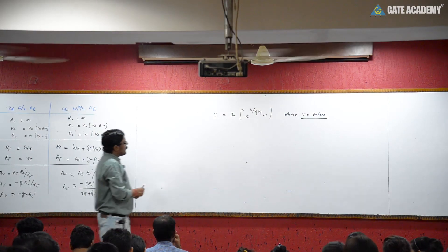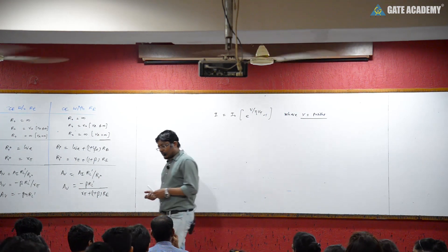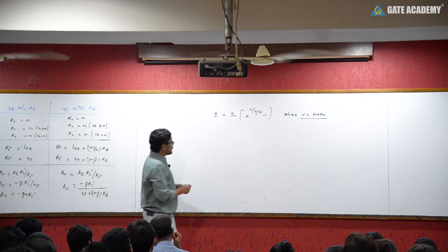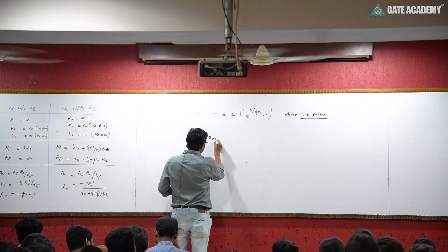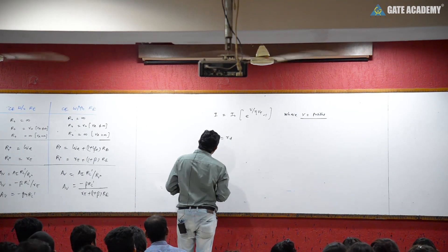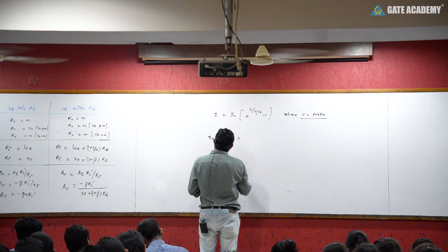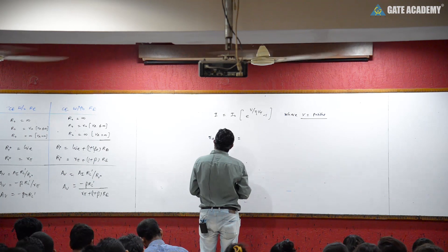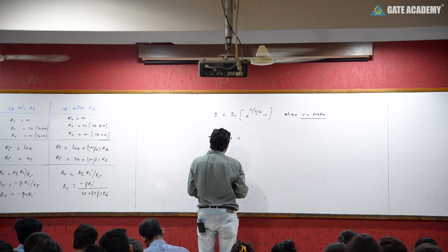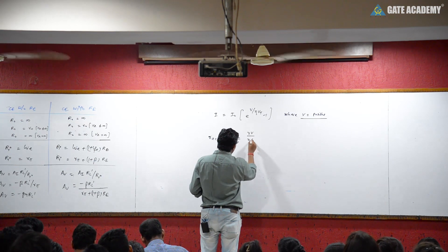Now let us define AC Resistance or Dynamic Resistance. AC Resistance or Dynamic Resistance is given by RAC or RD, which equals delta V upon delta I.